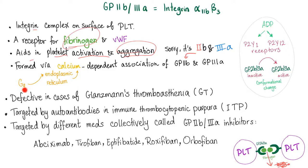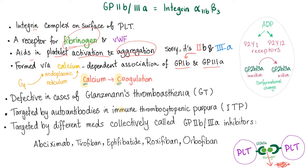You have a GQ-coupled receptor which loves calcium. Calcium is released from the endoplasmic reticulum. Calcium helps GP2B and GP3A come together, forming the GP2B3A receptor — note that GP1B is involved in adhesion, not in aggregation. This GP2B3A receptor is defective in cases of Glanzmann's thrombasthenia.